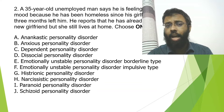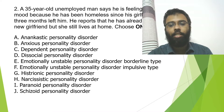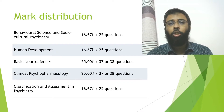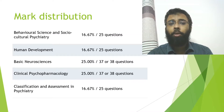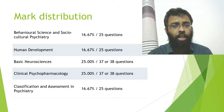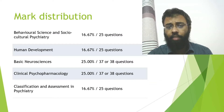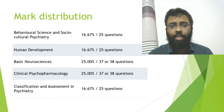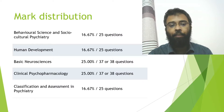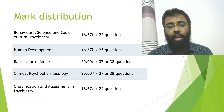The EMI is not that much different from MCQs, though it needs practice. The mark distribution covers five topics: behavioral science and socio-cultural psychiatry with 25 questions, human development with 25 questions, basic neurosciences and clinical psychopharmacology each with 37 or 38 questions, and classification and assessment in psychiatry with 25 questions.